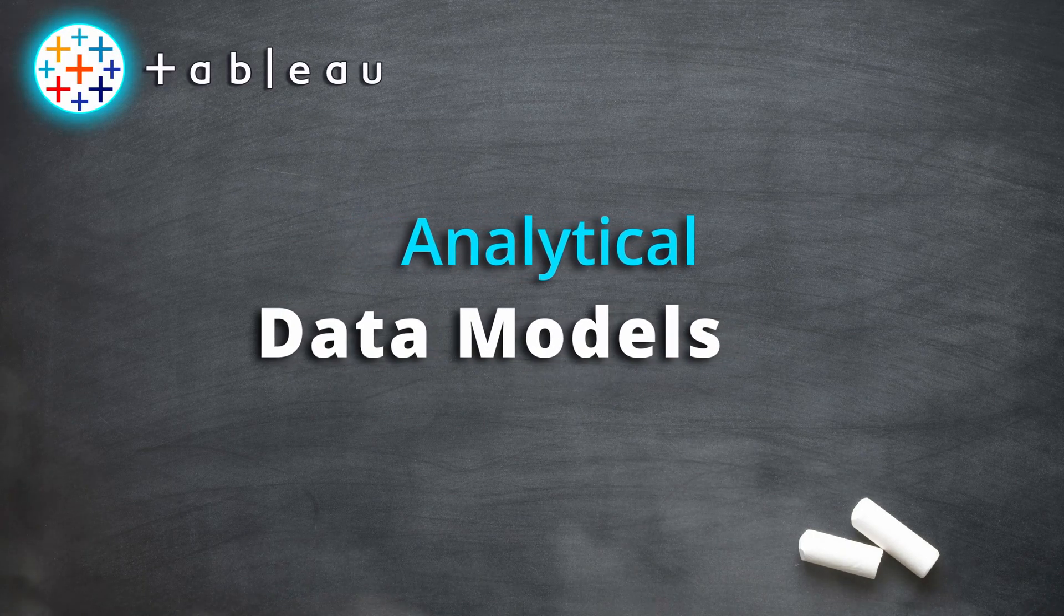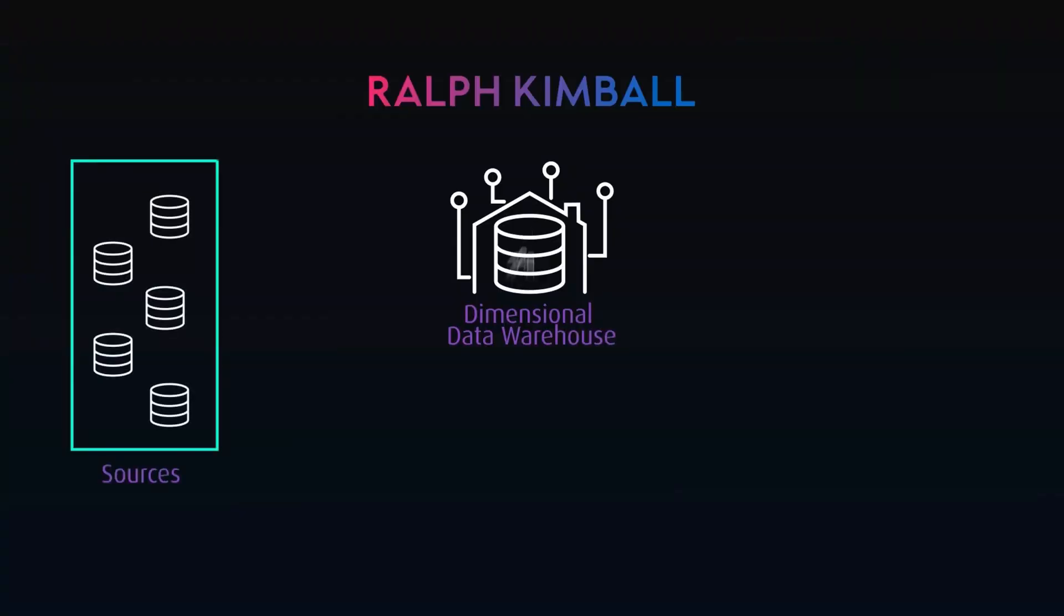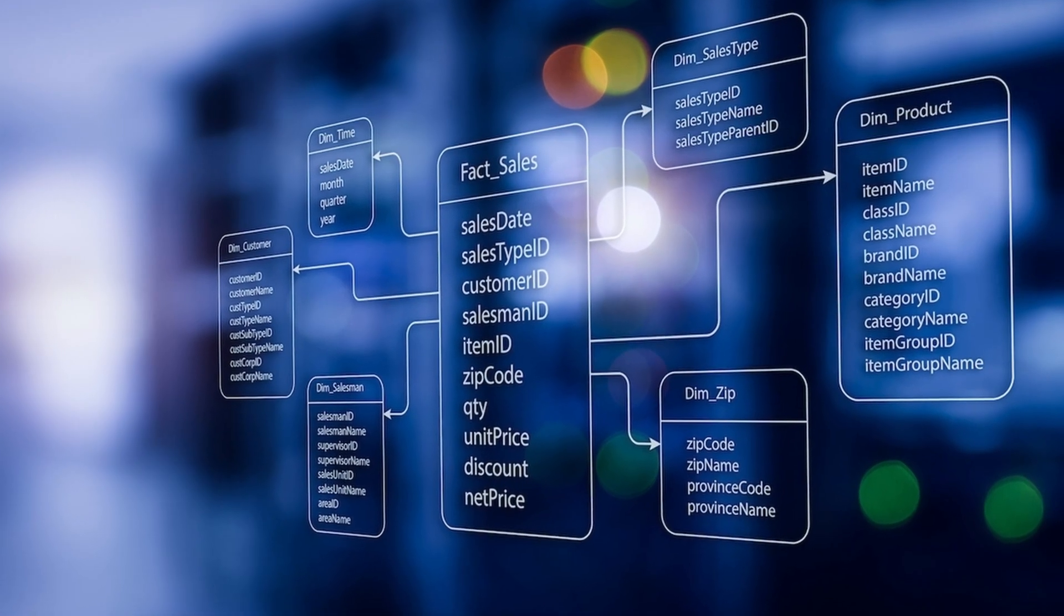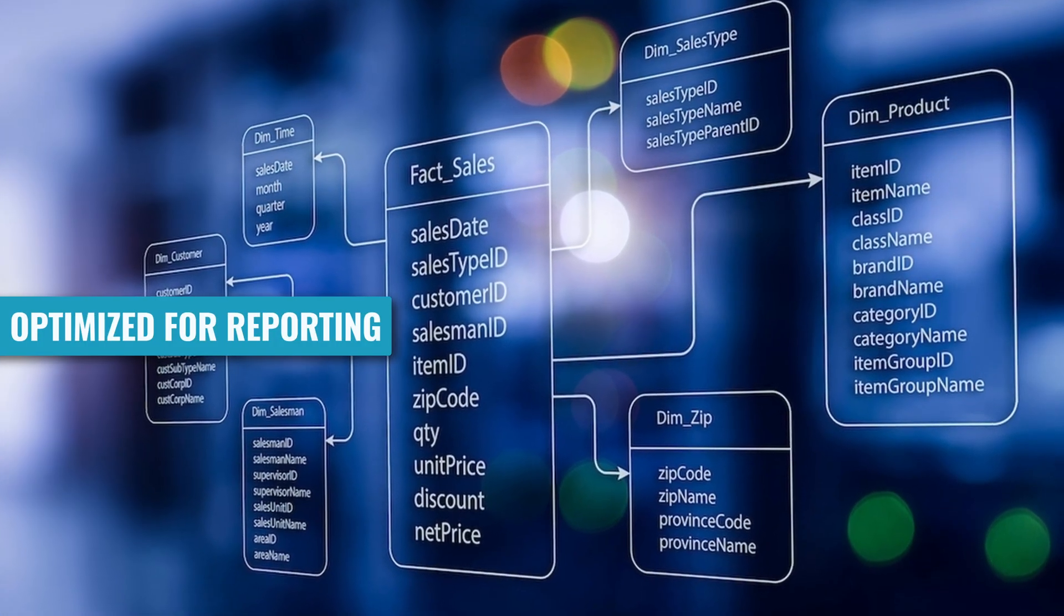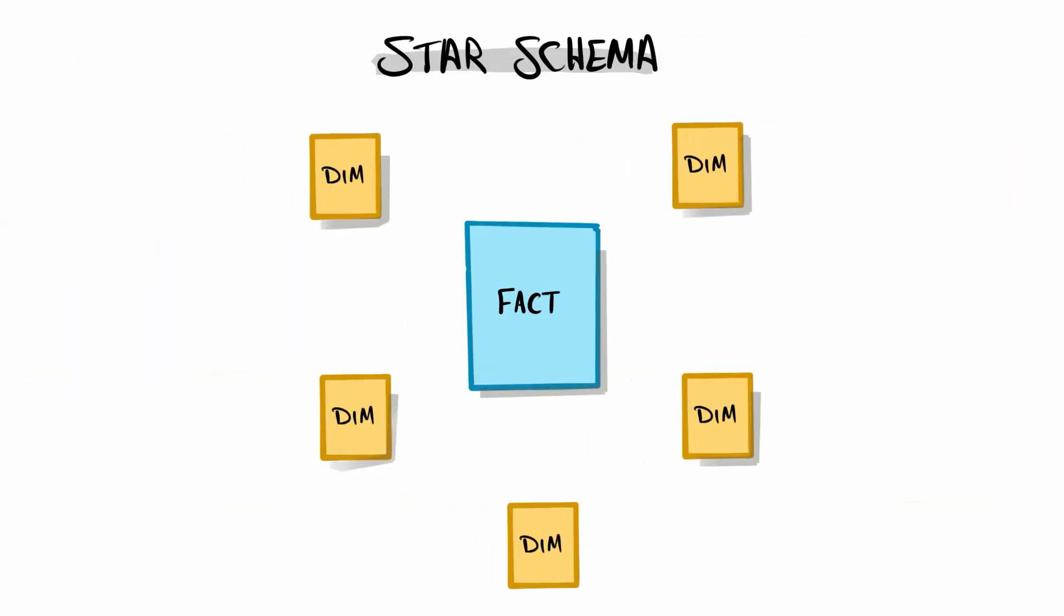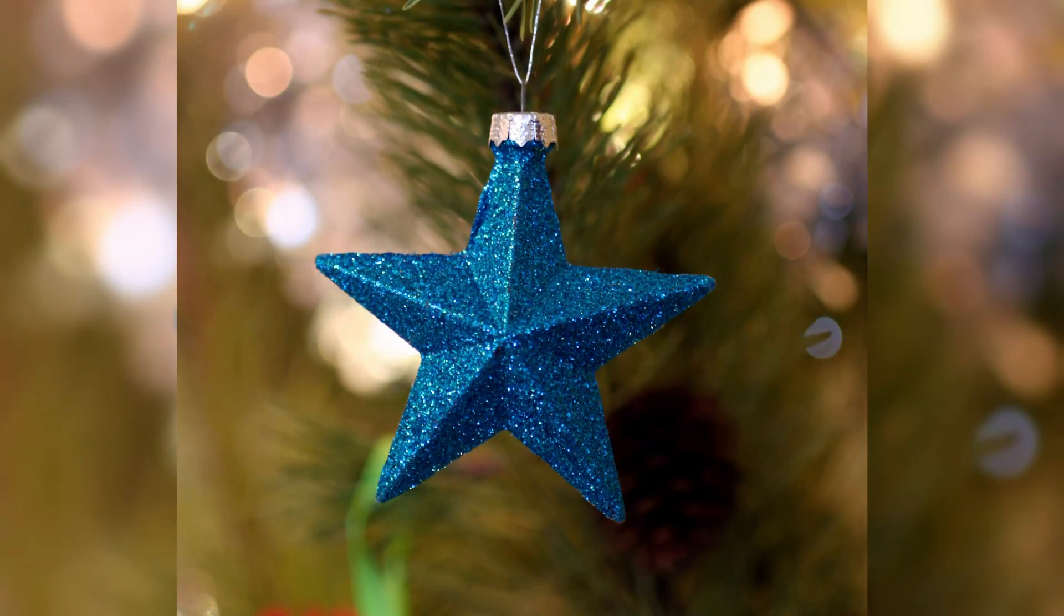Now, for analytics and especially for data warehousing and business intelligence, we need special data models that are optimized for queries and for analytics. It should be flexible and easy to understand. For that, we have two special data models. The first one is the star schema. Star schema has a central fact table surrounded by dimensional tables. The fact tables contain events and the dimensions hold descriptive information. The relationship between the fact and the dimension tables forms a star shape, and that's why we call it a star schema.